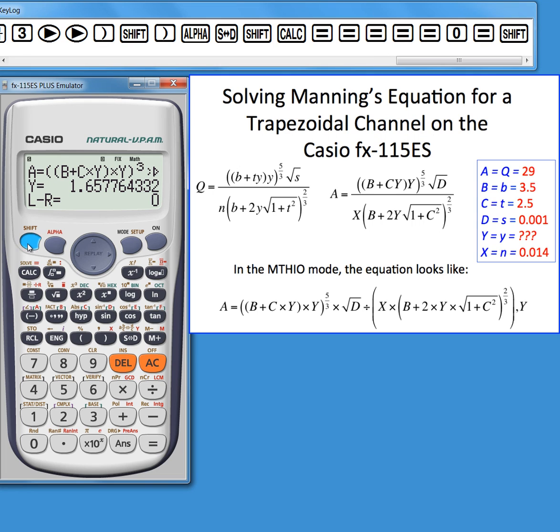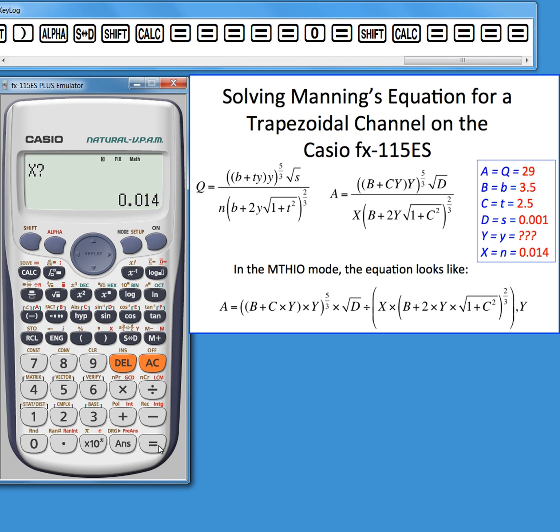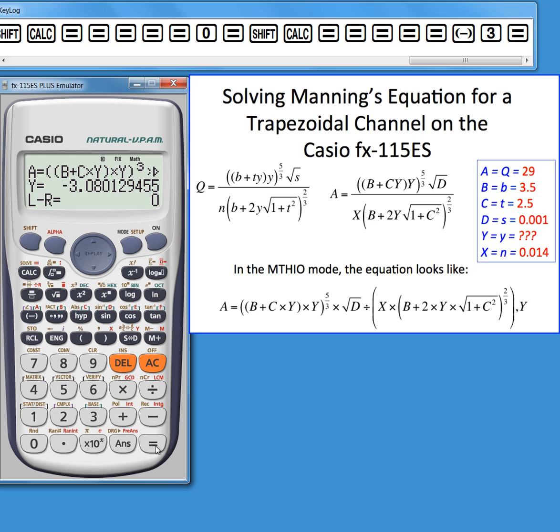If I hit shift solve again and enter the same values for everything except y - maybe I'll enter a stupid value like negative 3 and hit solve - it's going to come up with a negative answer. That simply means there's another solution, an impractical or nonsensical solution that you need to ignore.